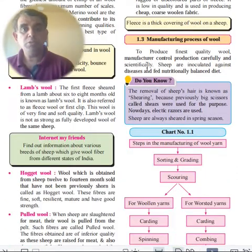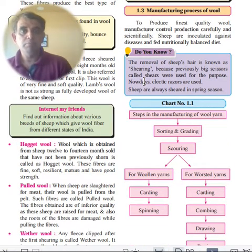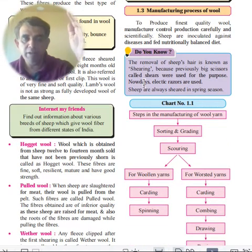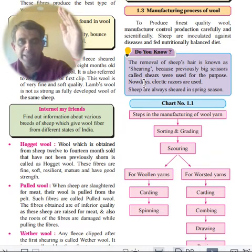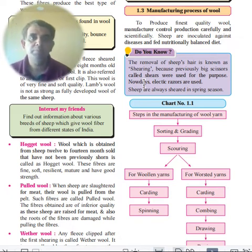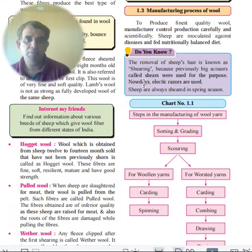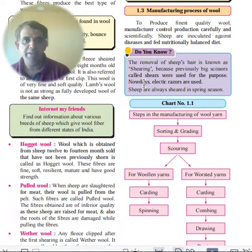Wool manufacturing begins with shearing — the removal of hair using large scissors or electric clippers. The steps are: shearing, sorting, grading, scouring, and then for woolen yarn: carding and spinning; for worsted yarn: carding, combing, drawing, roving, and spinning.